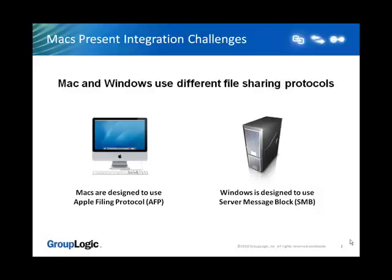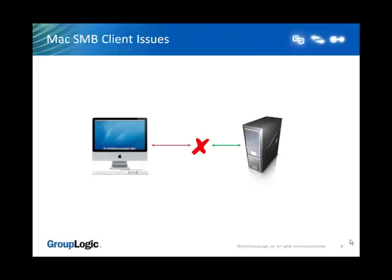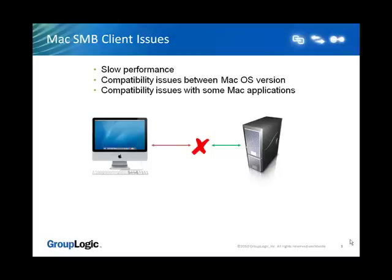Apple has created its own SMB client to provide basic connectivity to Windows File Servers. Unfortunately, this Mac SMB client performs slowly for both browsing and searching, and compatibility issues arise with the release of new versions of the Mac OS. Mac applications are typically designed to access data locally on the Mac. When used with an SMB file share, incompatibilities and even data corruption can occur.